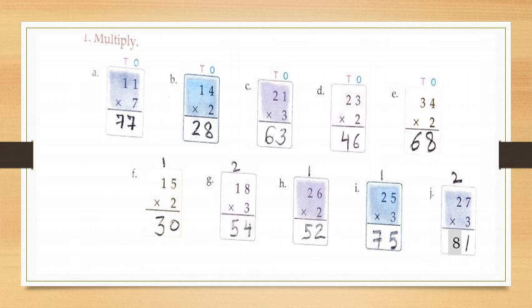Now children, F part: fifteen multiply by two. First multiply the ones by two — that is five into two is ten. Write zero under ones and carry one ten. Now multiply the tens by two — that is one into two is two. Add one carry, so two plus one is three. So your answer will be thirty.